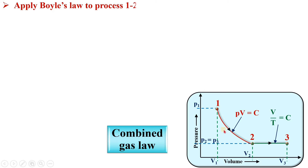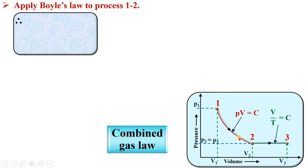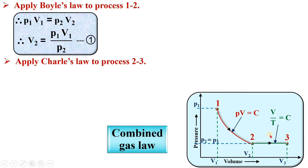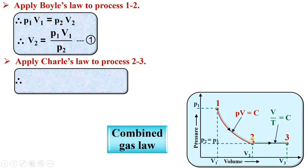Now apply Boyle's law to process 1-2. Then you can say P1V1 is equal to P2V2. Rearranging, V2 is equal to P1V1 by P2. Let us say this is equation number 1. Now next, apply Charles' law for process 2-3, so that V2 by T2 is equal to V3 by T3.